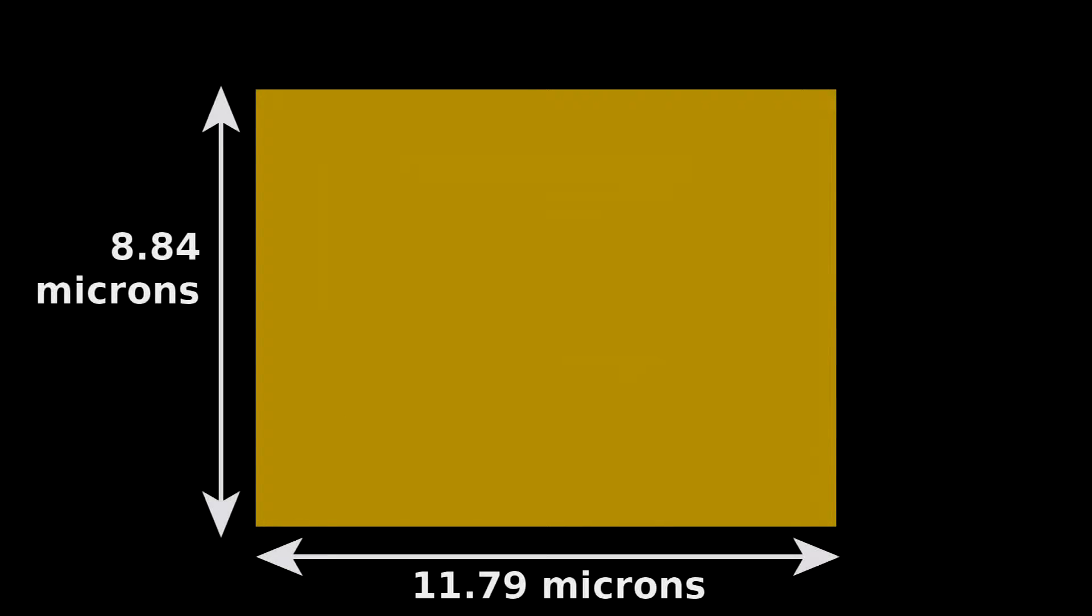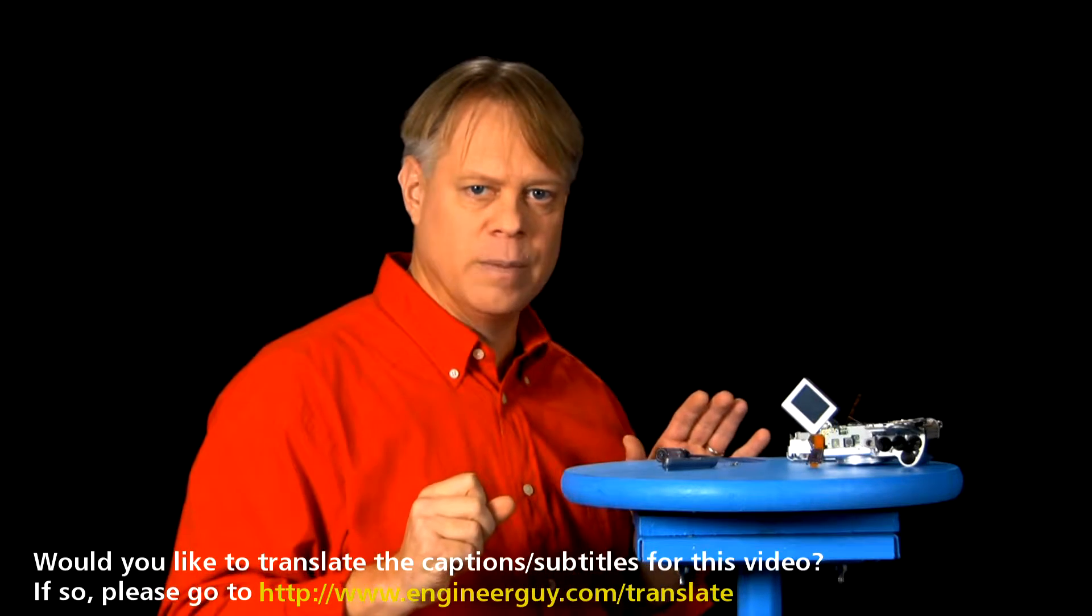If you enlarge a picture on your computer, you can easily see the tiny picture elements called pixels. Each one corresponds to a single section of the CCD. This is the essence of the digital camera. Several million of these sections of photosensitive silicon in a grid capturing an image.